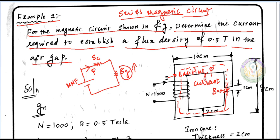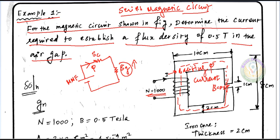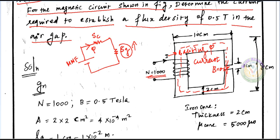Now, looking at the circuit diagram: number of turns N is given. The magnetic core dimensions are — length 10 cm, width 2 cm. The air gap length is 1 cm, and another distance is 8 cm. We need to find the exciting current.